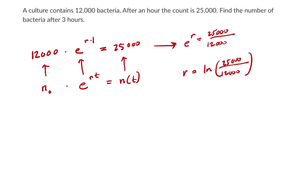They want to know what's going to happen after three hours, so we just plug this into our calculation. Starting from 12,000 times e to the rt. Well, r is the natural log of 25,000 over 12,000, times three. That's going to get us the final population value after three hours, n(3).